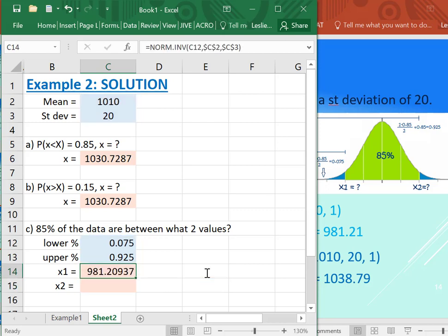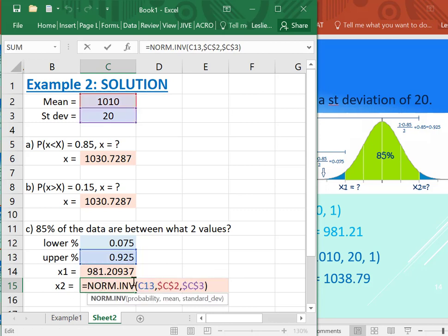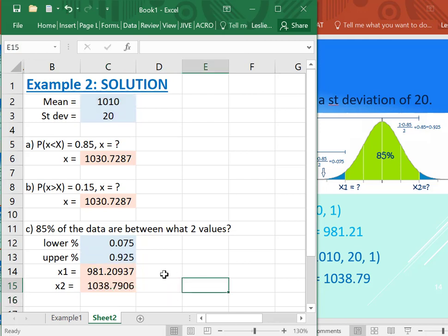And to get X2, same idea. Now, because I didn't lock the lower reference, I can just copy this down. So just grab the C13, the mean, the standard deviation, do the NORM.INV, and that gives us our X2, which is 1038.